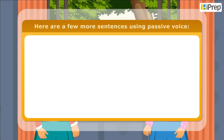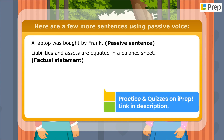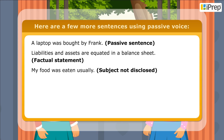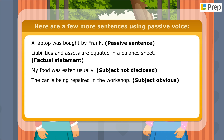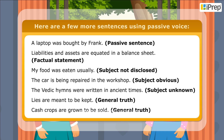Here are a few more sentences using passive voice: 'A laptop was bought by Frank.' (Passive sentence.) 'Liabilities and assets are equated in a balance sheet.' (Factual statement.) 'My food was eaten usually.' (Subject not disclosed.) 'The car is being repaired in the workshop.' (Subject obvious.) 'The Vedic hymns were written in ancient times.' (Subject unknown.) 'Lies are meant to be kept.' (General truth.) 'Cash crops are grown to be sold.' (General truth.)